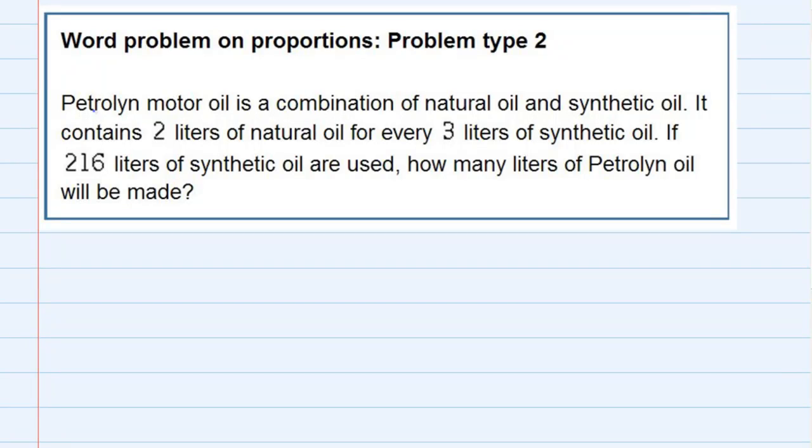Word problem on proportions, problem type 2. This time we're told Petrolin motor oil is a combination of natural oil and synthetic oil. It contains 2 liters of natural oil for every 3 liters of synthetic oil. If 216 liters of synthetic oil are used, how many liters of Petrolin oil will be made?